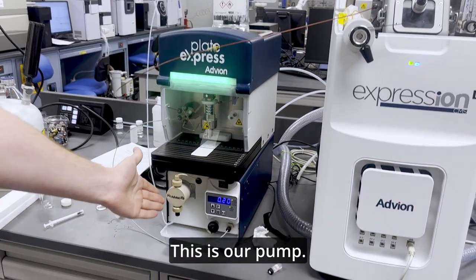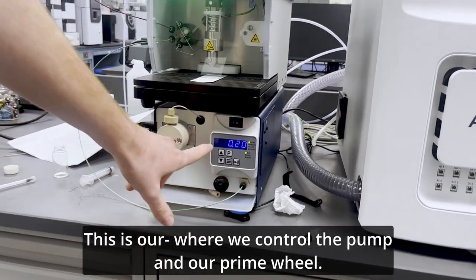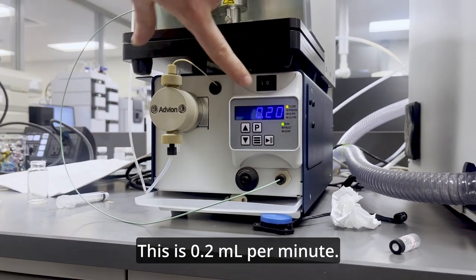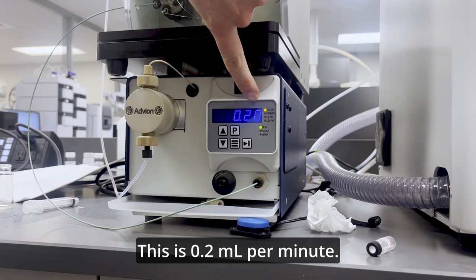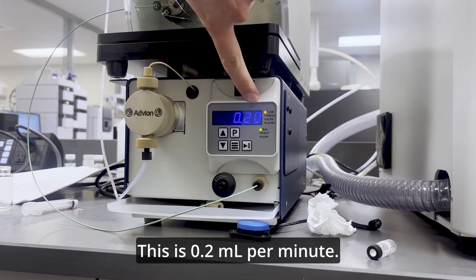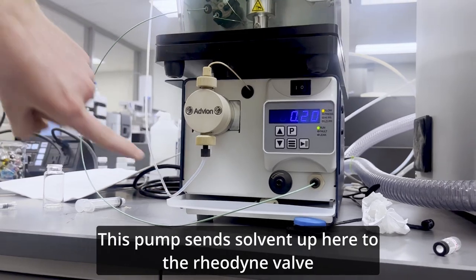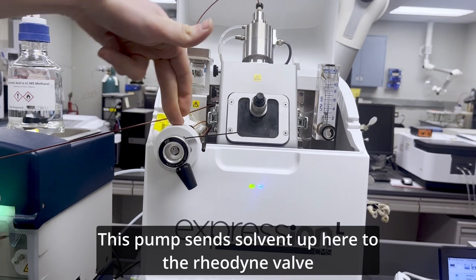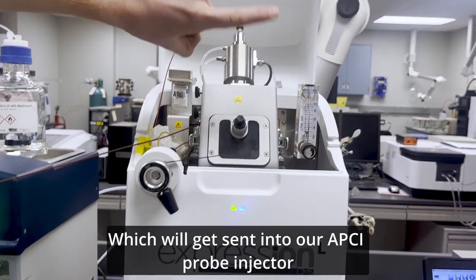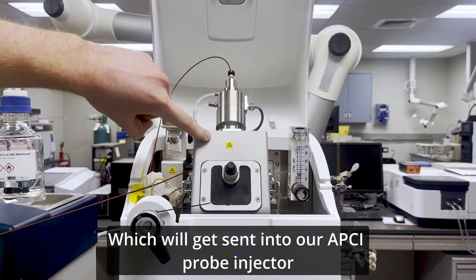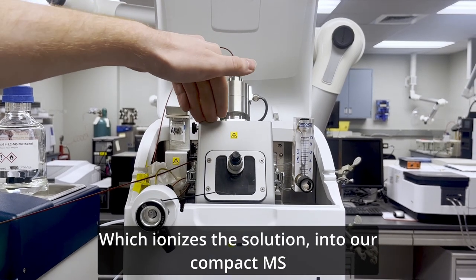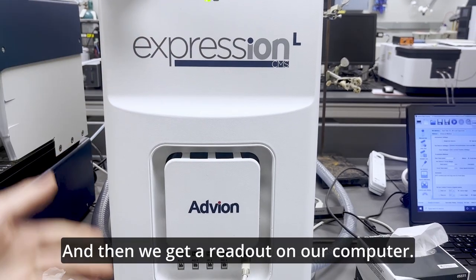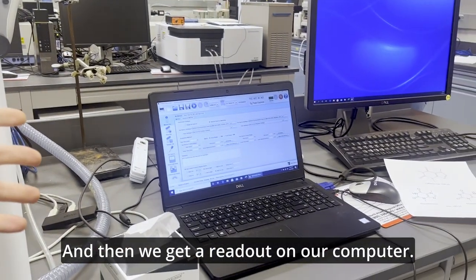This is our pump. This is where we control the pump and our prime wheel. This is 0.2 milliliters per minute. This pump sends solvent up here to the Reodyne valve, which will get sent into our APCI probe injector, which ionizes the solution into our compact MS, and then we get a readout on our computer.